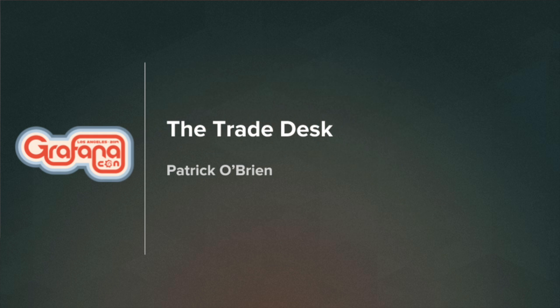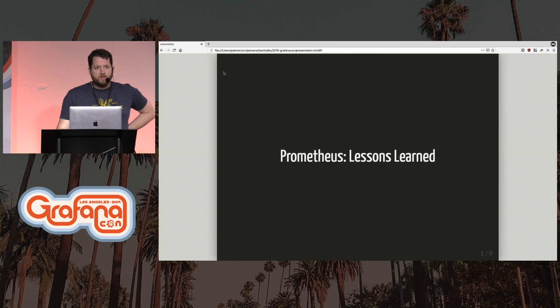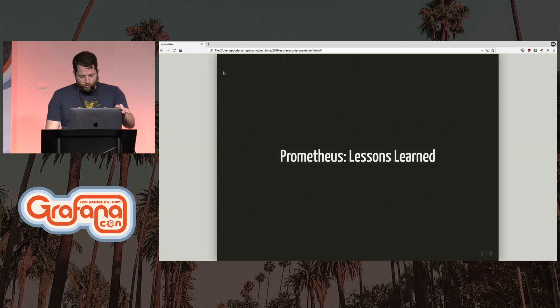I've wanted to do this lightning talk for a while. We recently had a very long project of getting off of our old monitoring system, which was Nagios and Graphite and a combination of other homegrown pieces of software, and onto something more standard — we chose Prometheus. This is a lessons-learned talk about what I would do differently, or the same, if I had to redo this project.